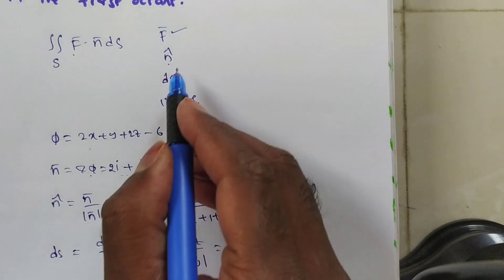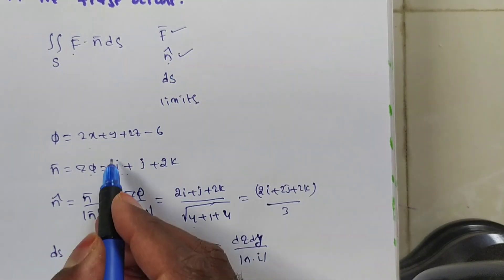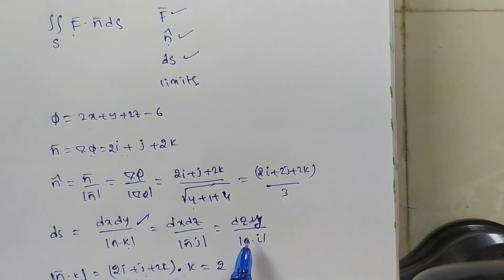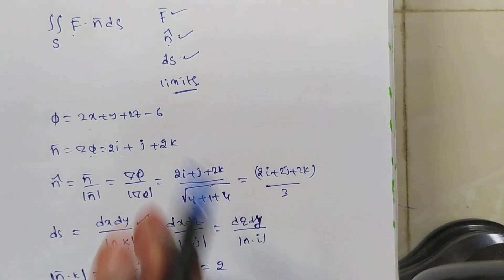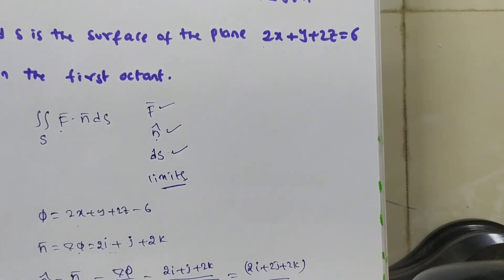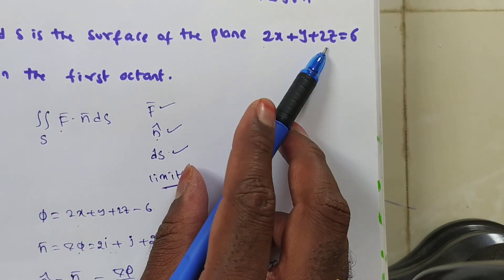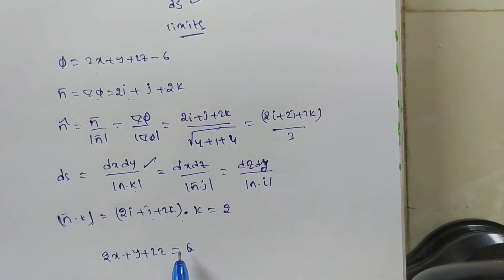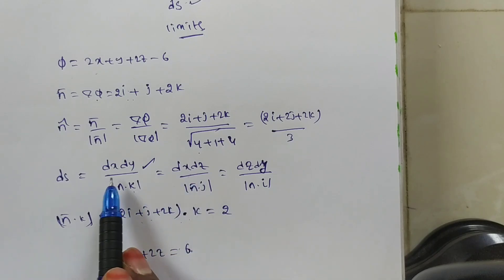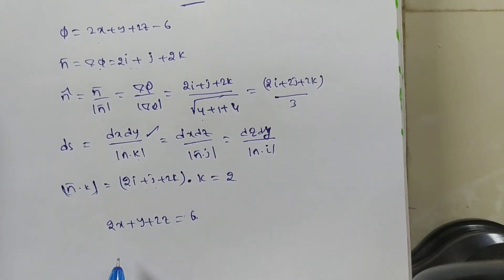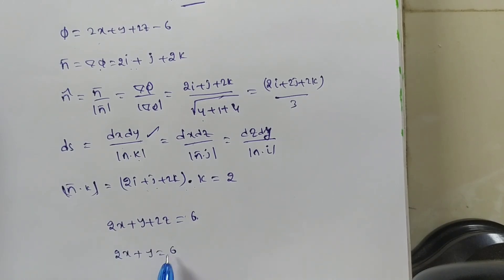Next I need to find limits. To find limits, again look at the surface: 2x + y + 2z = 6. We are doing the double integration on the xy plane, and on the xy plane z = 0, so there is no z term — giving us 2x + y = 6.